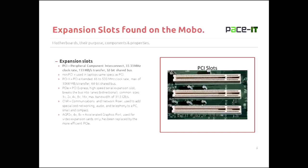Now let's talk about expansion slots found on motherboards. We'll start with PCI — Peripheral Component Interconnect. It had a 33.33 megahertz clock rate, a maximum transfer rate of 133 megabytes per second, and operated on a 32-bit shared bus. You can still find PCI slots on some mainboards, but they're not that common — they have been superseded.